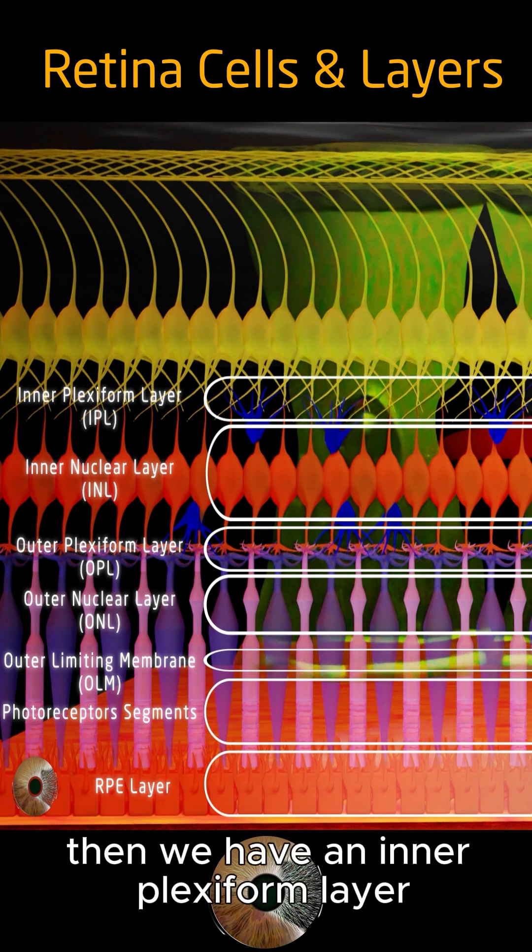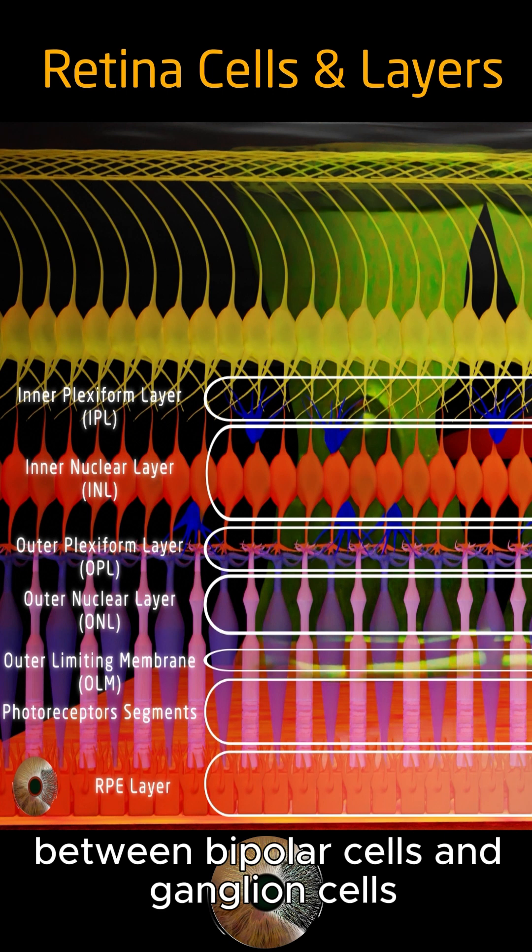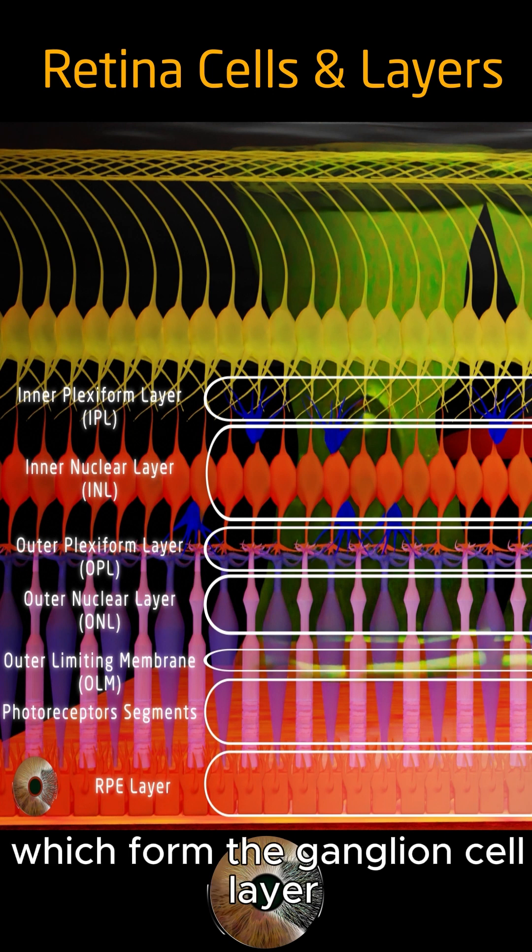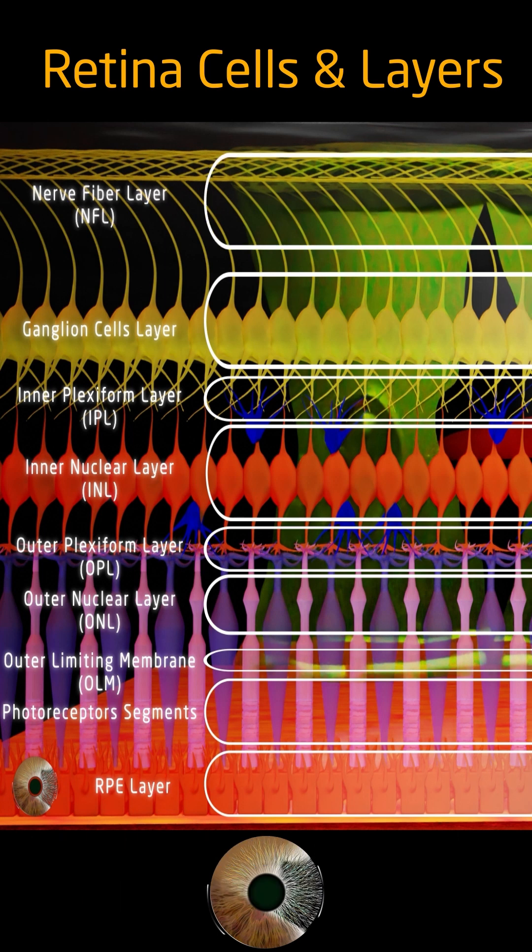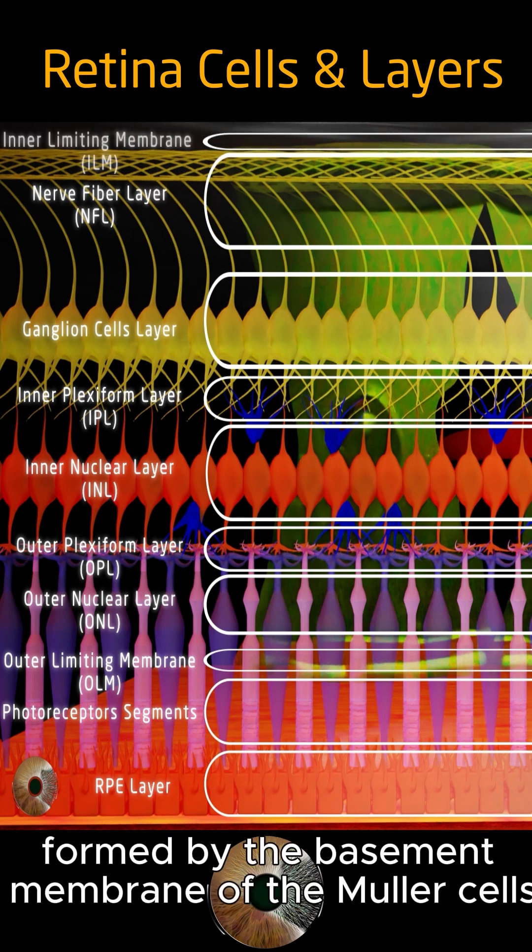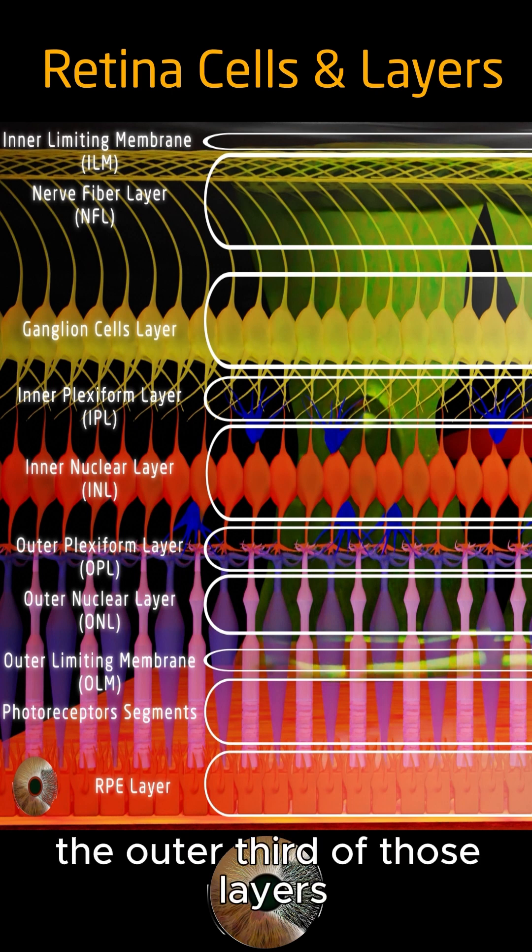Then we have an inner plexiform layer between bipolar cells and ganglion cells, which form the ganglion cell layer. The axons of those cells form the nerve fiber layer that gather in the optic nerve, the inner limiting membrane formed by the basement membrane of the muller cells.